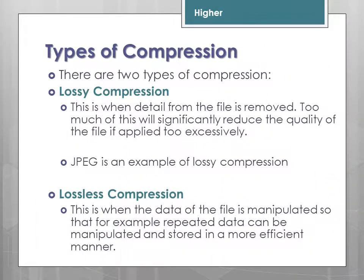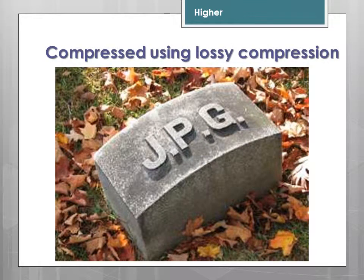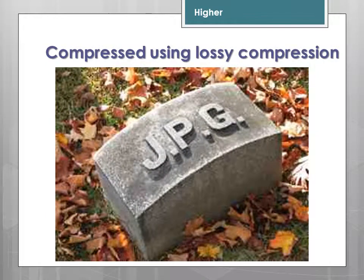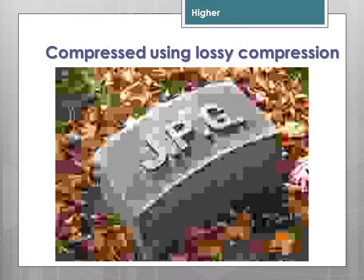There are two main types of compression. Lossy compression is when detail is removed from the file — too much will reduce quality excessively. Lossless compression uses clever algorithms to remove repeated data so that data can be stored in a far more compact manner without loss. For example, if we compress an image using JPEG with increasing compression, between the first and second pass there is very little change, but continuing further makes artefacts very visible until the image is almost unrecognisable.